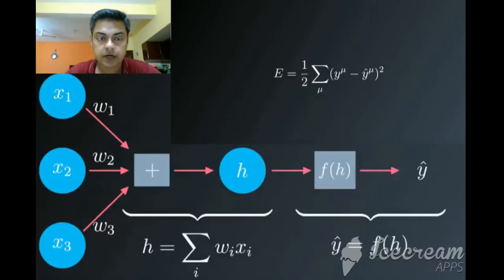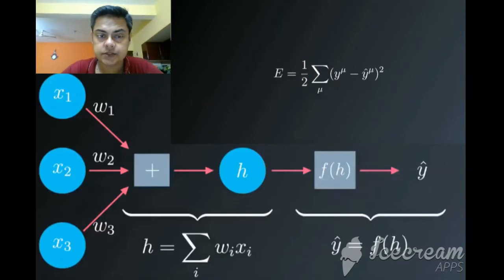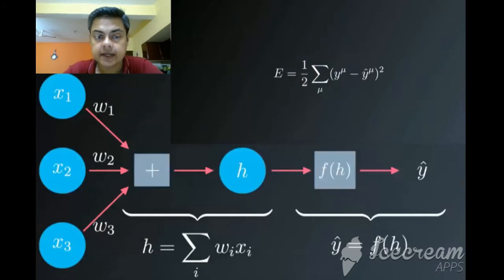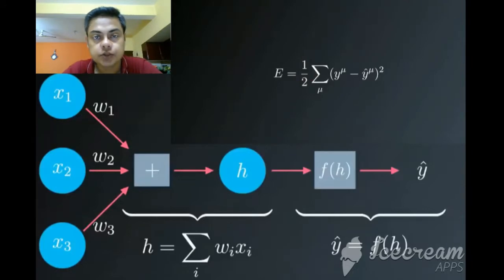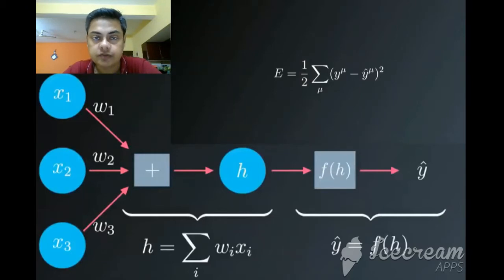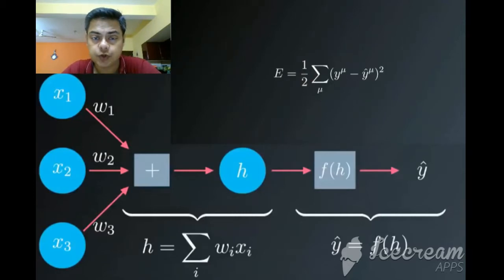Today our learning is all about the concept of gradient descent. What is gradient descent? Gradient descent is the reduction of the error function, in simple terms. We will understand the reduction of the error function through a lot of diagrams and concepts in this video. The Python calculation is covered in another video.